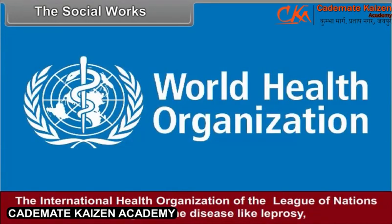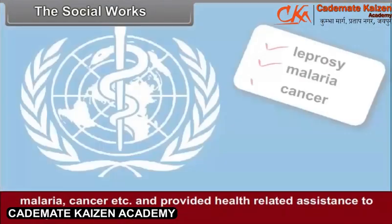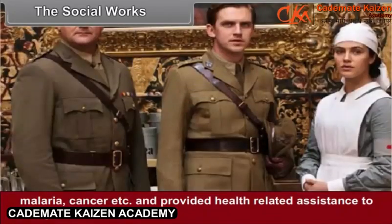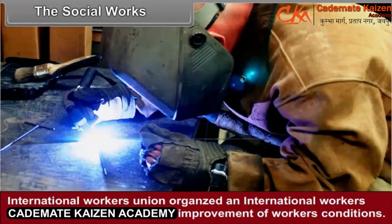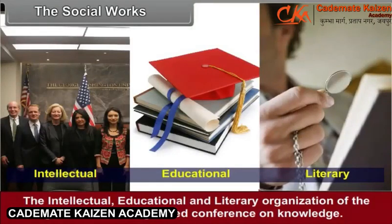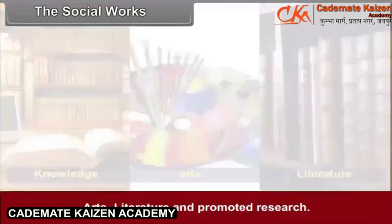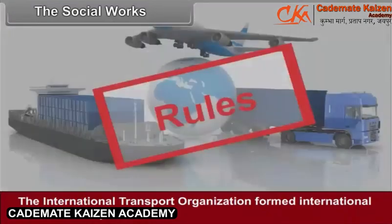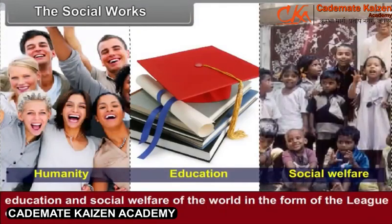The International Health Organization of the League started a movement against diseases like leprosy, malaria, and cancer, and provided health-related assistance to many countries. The International Workers' Union organized conferences to frame rules for improvement of workers' conditions. The intellectual, educational, and literary organization organized conferences on knowledge, arts, and literature and promoted research. The International Transport Organization formed international rules for transportation. In short, the League of Nations was an international organization working for humanity, education, and social welfare of the world.